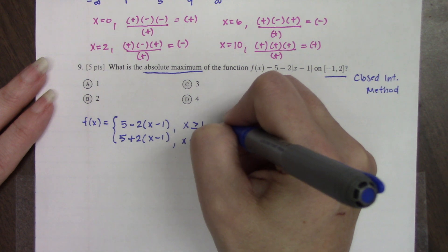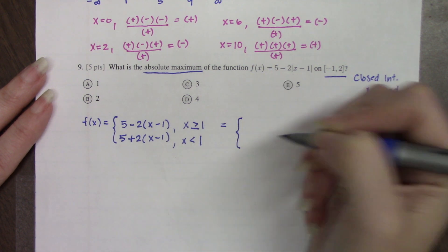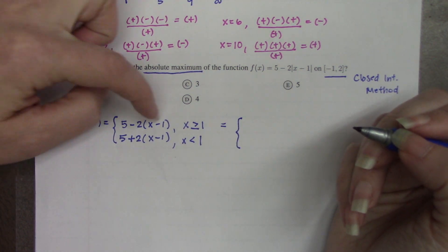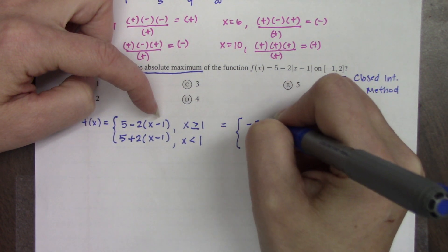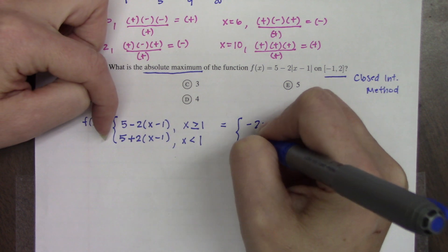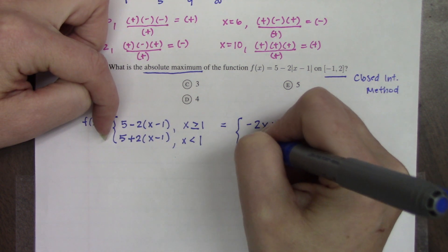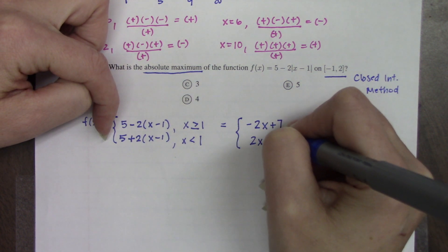So now I'm going to do a cleanup step, and I'm just going to distribute the 2, clean this up, and we get that this is -2x + 7, and this is 2x + 3.